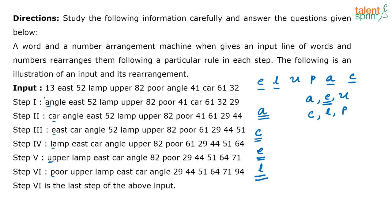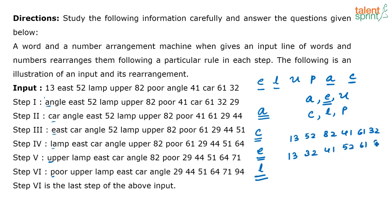Now coming to the numbers: they are arranging the numbers in ascending order. The numbers you have are 13, 52, 82, 41, 61, and 32. If you arrange these in ascending order you get: 13, 32, 41, 52, 61, 82.